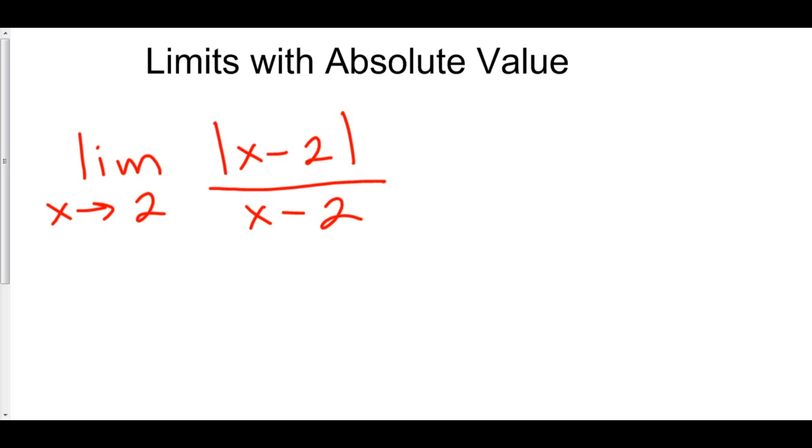So, let's take a look at how we do this following problem. The limit as x approaches 2 of the absolute value of x minus 2 over just x minus 2. So, to get a feel for what's happening here, let's plug in some numbers.